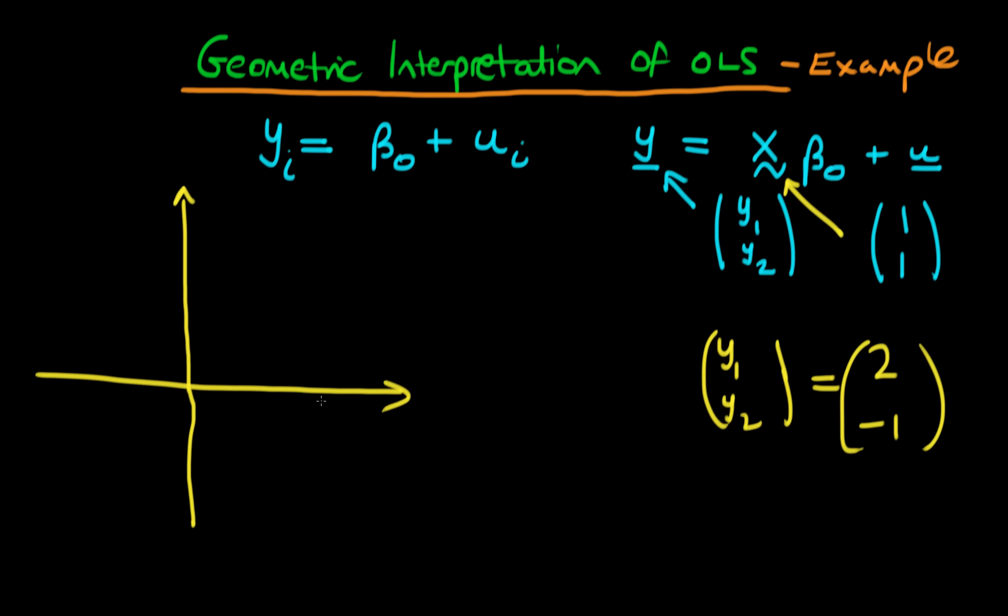So we can think about the 2 as being represented by this first axis here, so let's say the point 2 is somewhere like that. And the point minus 1 is somewhere along the second axis. So the vector y is that which joins the origin with this point. So this is the vector y here.